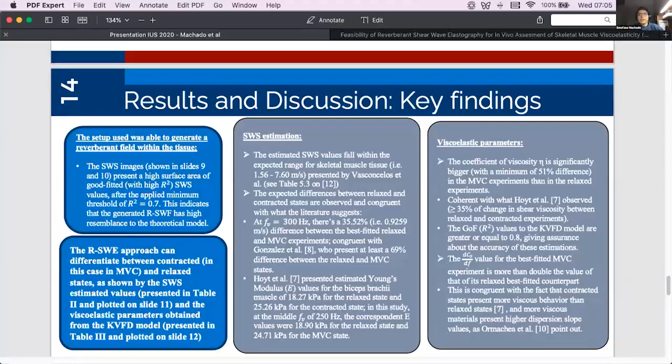Finally, the dispersion slope values for the best fitted MVC experiments is more than double the value of that of its relaxed best fitted counterpart. This is congruent with the fact that contracted states present more viscous behavior than relaxed states and more viscous materials present higher dispersion slope values.